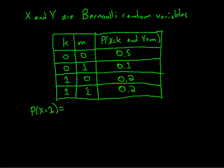because the probability that X is 0 is 1 minus that. And the probability that X is 1 is just the sum of the probability that X is 1 and Y is 0, and the probability that X is 1 and Y is 1. So it's 0.2 plus 0.2, which is 0.4.